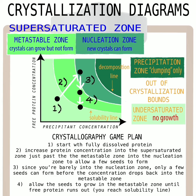You start at a place where you have fully dissolved protein, and then you want to increase the protein into a supersaturated zone, passing through what's called the metastable zone. In the metastable zone, crystals can grow but they can't form. Crystal formation requires nucleation, where trendsetting proteins come out of solution to start a crystal, and then crystal growth occurs where other protein molecules join in to make the crystal grow.